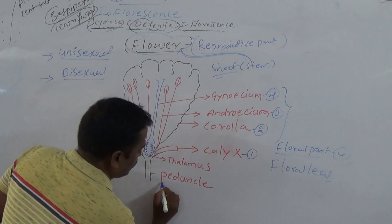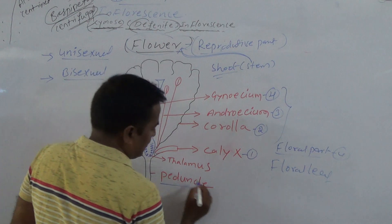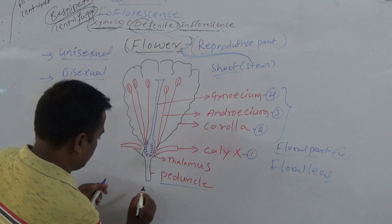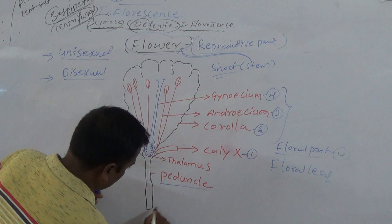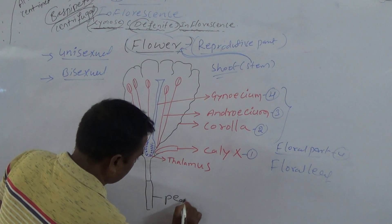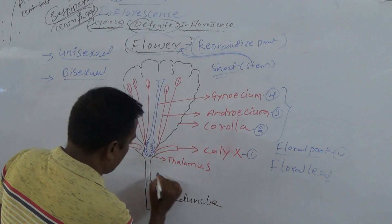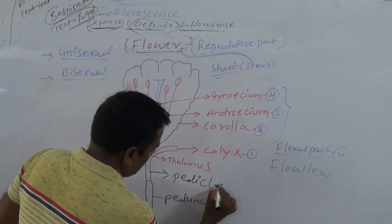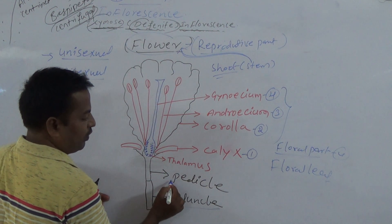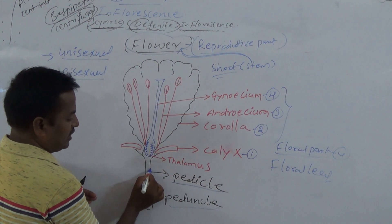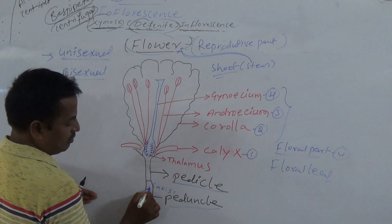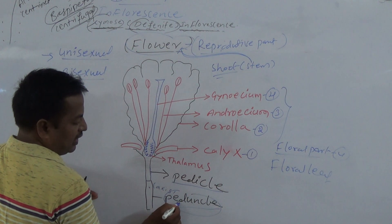Every flower is produced from an axis. The flower is produced from an axis called the peduncle. The stalk of the flower is called the pedicel. The apex of the pedicel is the axis underneath the flower. Pedicel is nothing but the floral axis — it produces the flower.